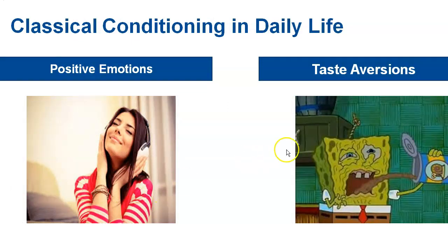Another thing we talked about was taste aversion. It's a very strong version of classical conditioning where just one bad experience with a food can put you off that food for life. The example from class involved a tuna fish sandwich where the mayonnaise went off — even the mention of tuna makes you feel nauseous. That is a taste aversion.